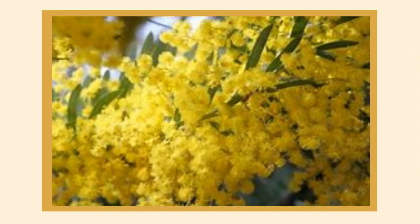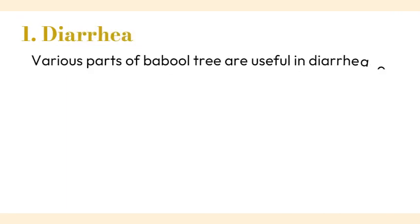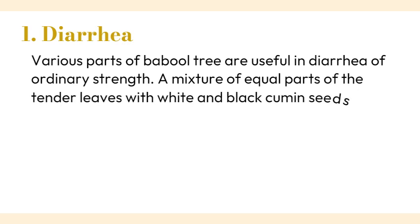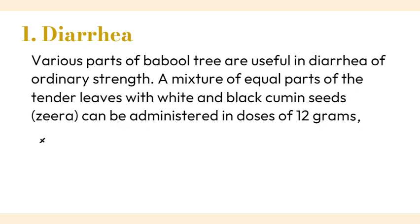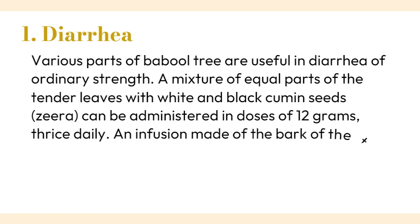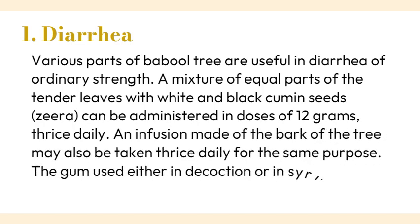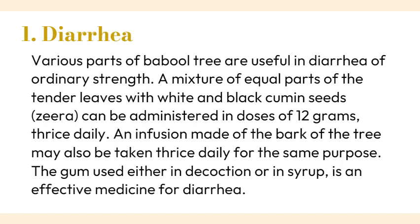1. Diarrhea: Various parts of the Babool tree are useful in diarrhea of ordinary strength. A mixture of equal parts of the tender leaves with white and black cumin seeds can be administered in doses of 12 grams, thrice daily. An infusion made of the bark may also be taken thrice daily for the same purpose. The gum, used either in decoction or in syrup, is an effective medicine for diarrhea.